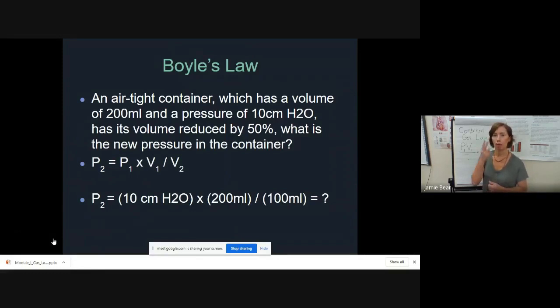We're looking for P2, pressure container 2. When we put in all of our known variables, V1 is 200, P1 or pressure 1 is 10 centimeters of water pressure. If the volume is reduced by 50%, V2 then is 100 milliliters. We solve for P2. P2 then ends up being 10 centimeters of water pressure, which is P1 times V1 divided by V2. The answer then is 20 centimeters of water pressure.